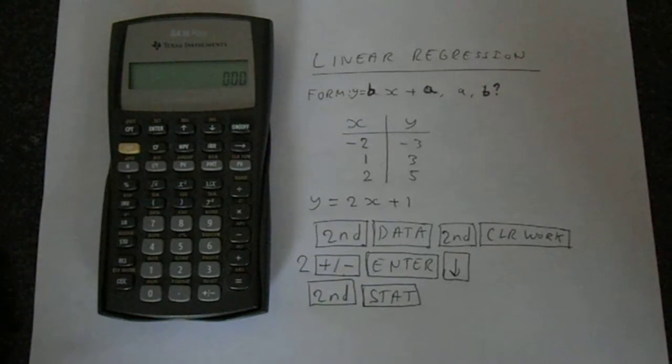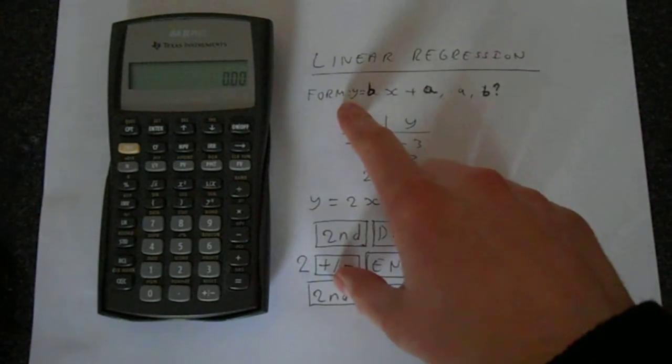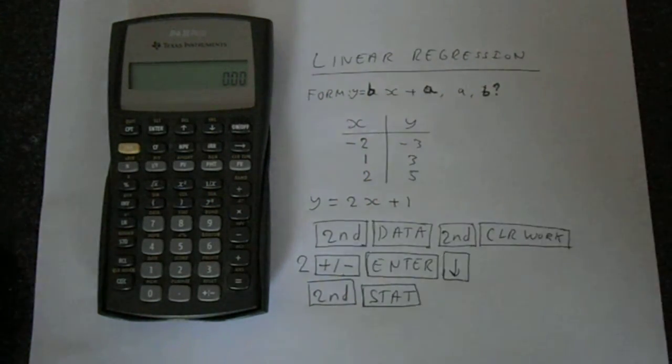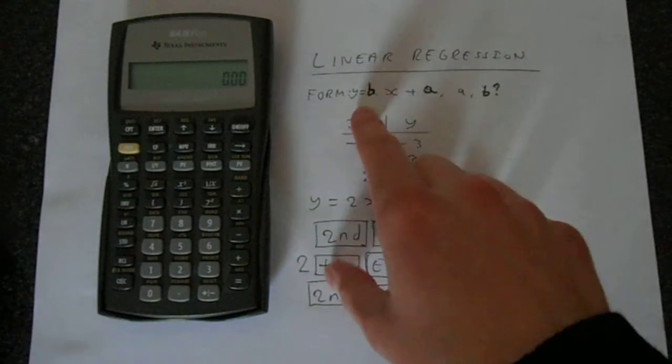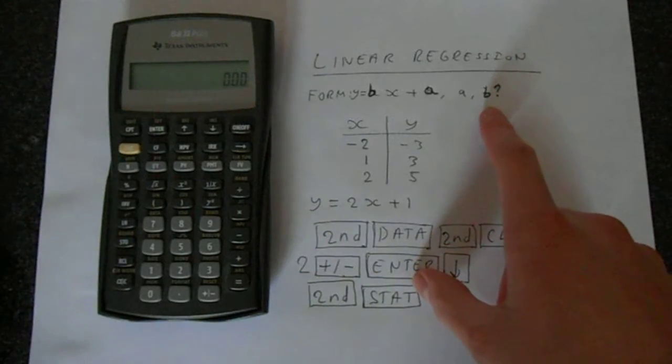In this video I'm going to show you how to do linear regression on your Texas Instruments BA2 Plus financial calculator. We're going to get an equation in the form y equals bx plus a, and we need to find what a and b is. Confusingly, b comes first, but that's just the way it's programmed.